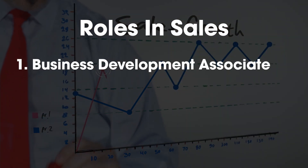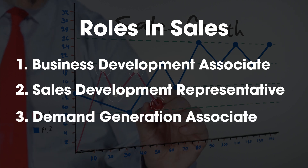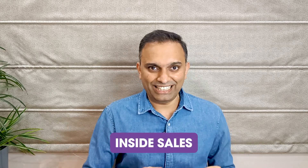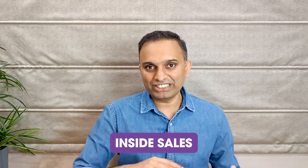Now moving on to the second theme: sales. There are three specific job titles from the LinkedIn report: number one, Business Development Associate; number two, Sales Development Representative; and number three, Demand Generation Associate. All of them require you to be a good salesperson. A quick insight — if you are sitting in your office and selling to someone, that is called inside sales, and all these roles are moving towards inside sales through Zoom calls, telephone, email, or cold calling.